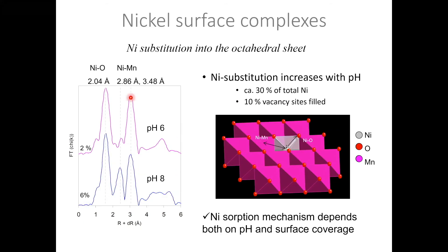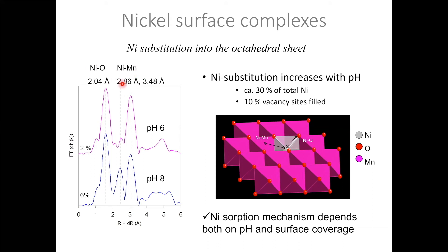This substitution of nickel into the sheet is really apparent at higher pH values. Here is a spectrum of the 6% nickel loading at pH 8. We again have the characteristic triple-corner-sharing nickel-manganese shell, and another manganese shell at 2.86 Å. At this higher pH value, about 30% of the total nickel appears as incorporated nickel, accounting for about 10% of the vacancy sites.